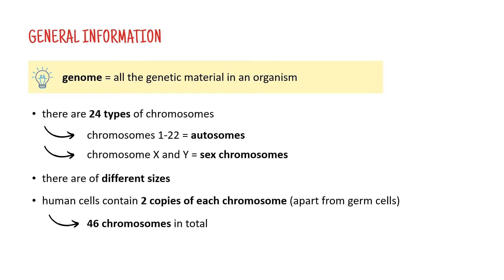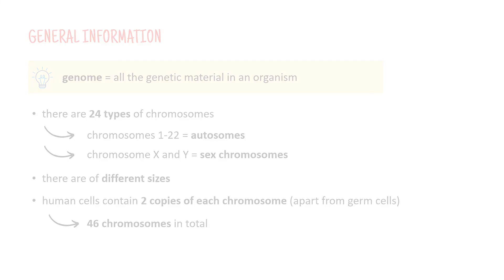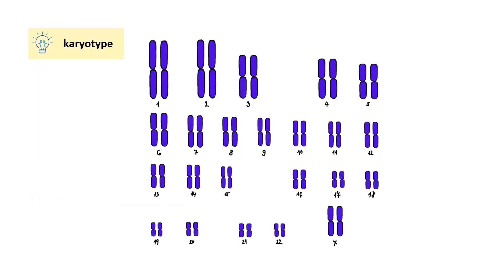This is true for almost every cell in the body except for germ cells, for example, which only contain one copy of each chromosome. A full set of these 46 chromosomes is called a karyotype. And here you can see one, a bit simplified, but you see the two copies of each chromosome and you can also see that we have two copies of sex chromosome X. So we're looking at a woman's karyotype.